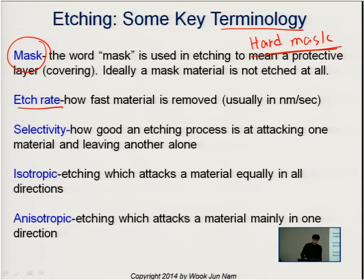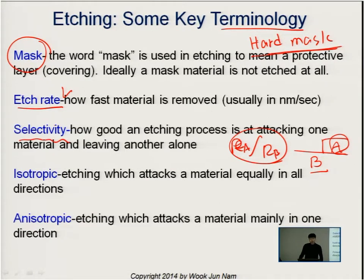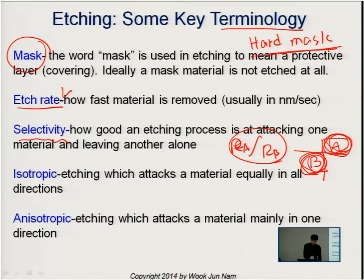The etch rate is the speed at which you are removing material. Etch selectivity is the ratio of the etch rate of the mask material A versus the etch rate of material B. In most cases we want infinite etch selectivity — we do not want to lose any material from A, but we want to remove B very fast.